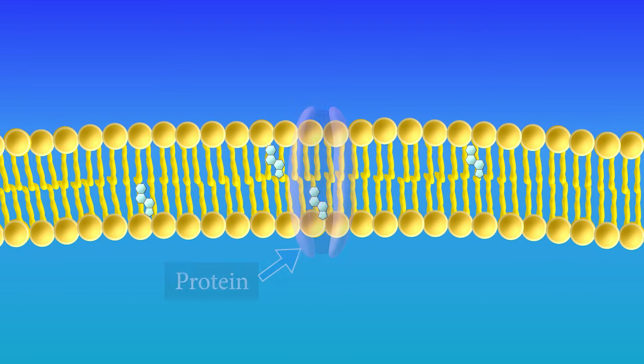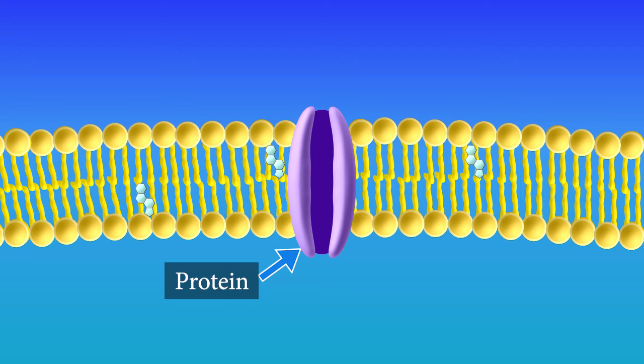Proteins are another important part of the membrane. They do many functions, but one of the most important ones is transporting materials across the membrane, especially if they have a hard time passing through the phospholipid bilayer.